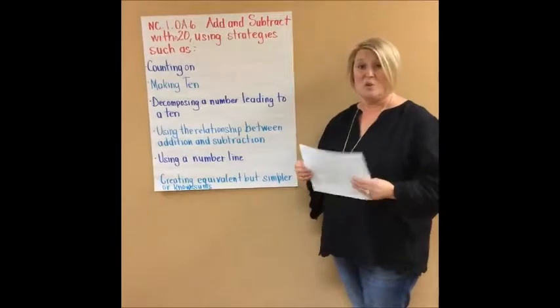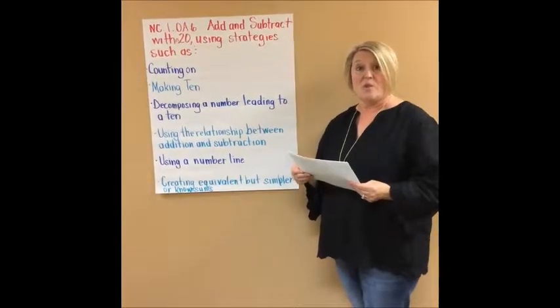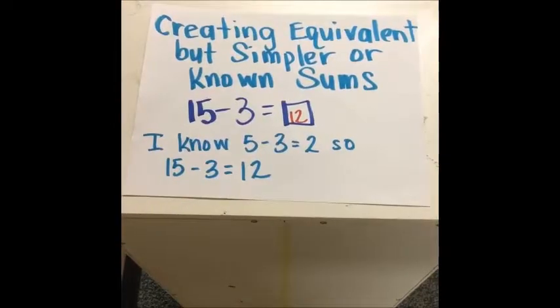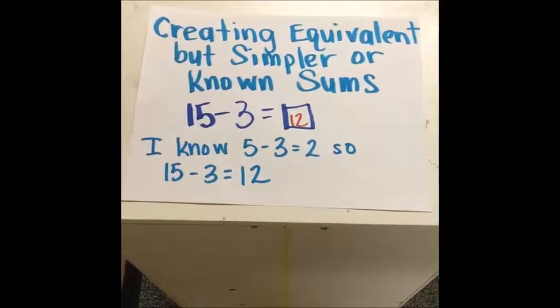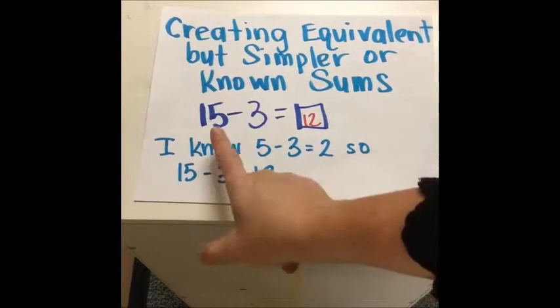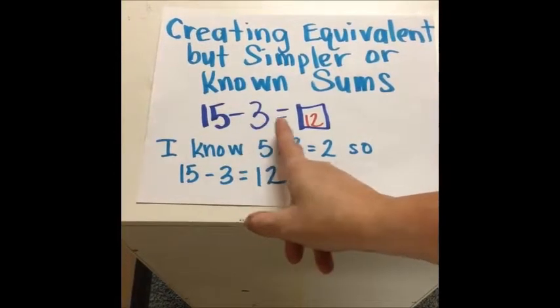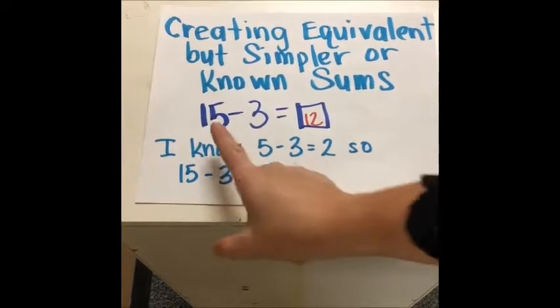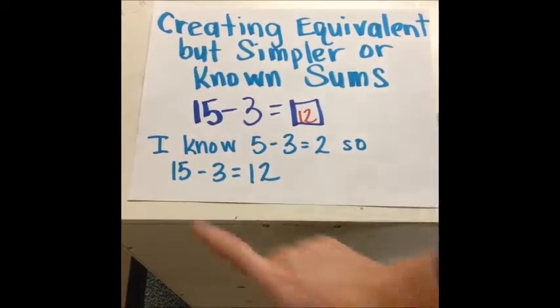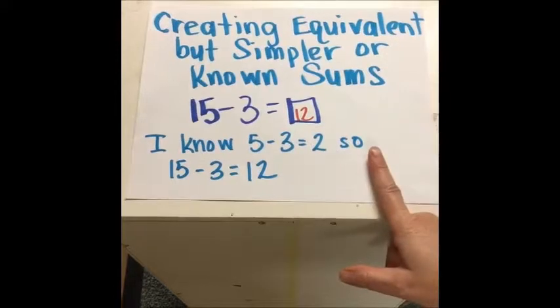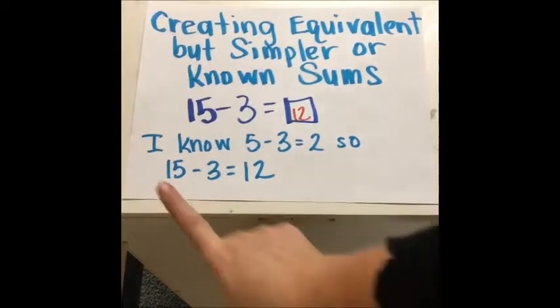The problem-solving strategy is creating equivalent but simpler or known sums. For this one, if we have a problem of 15 minus 3 equals something, they could take a simpler fact like 5 minus 3 equals 2, then add the 10 on and they know 15 minus 3 equals 12.